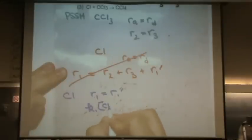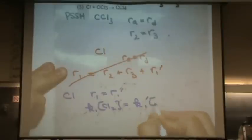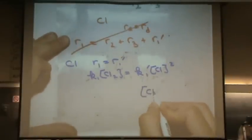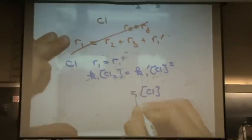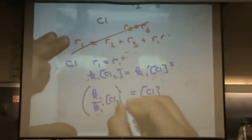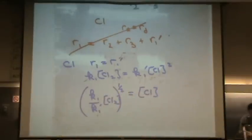So in this case, K1 Cl2 equals K1 prime Cl squared. Let me solve for Cl. Cl equals K1 over K1 prime Cl2 to the one half power. Because I had it squared here, I take square root of both sides.